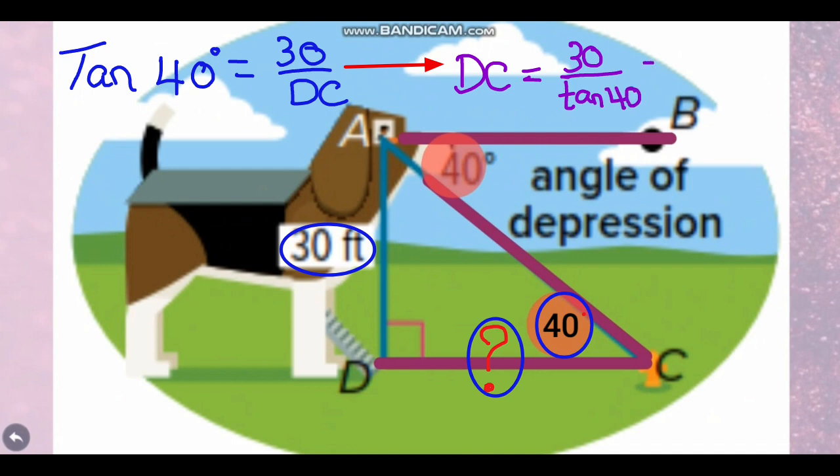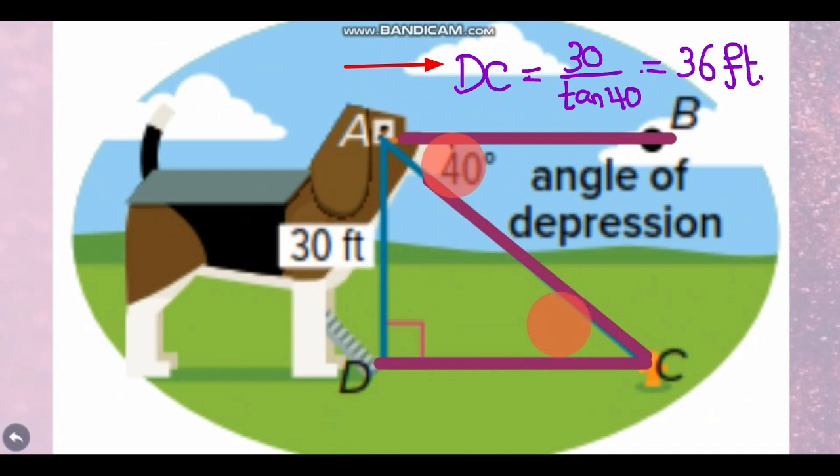Then to find DC, you will divide 30 over tan 40 on the calculator to find the answer.